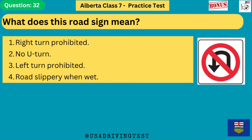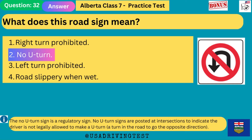What does this road sign mean? 1. Right turn prohibited. 2. No U-turn. 3. Left turn prohibited. 4. Road slippery when wet. The answer is 2: no U-turn. The no U-turn sign is a regulatory sign. No U-turn signs are posted at intersections to indicate the driver is not legally allowed to make a U-turn — a turn in the road to go the opposite direction.